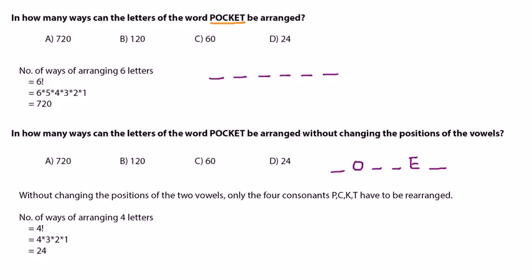Because the letter P can occupy any of the 6 positions, so 6 into, and then the letter O can occupy any of the other 5. And in the same way, the next letter C can occupy the other 4 and K can occupy any of the other 3. So we get 6 into 5 into 4 into 3 into 2 into 1, or 6 factorial, and hence 720.